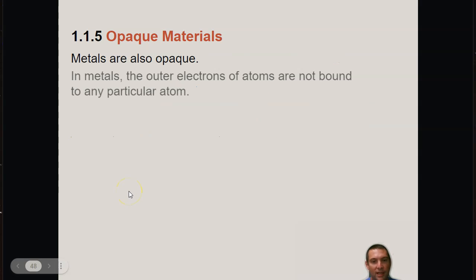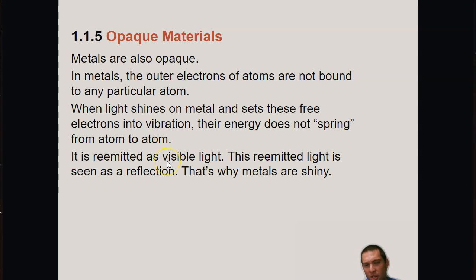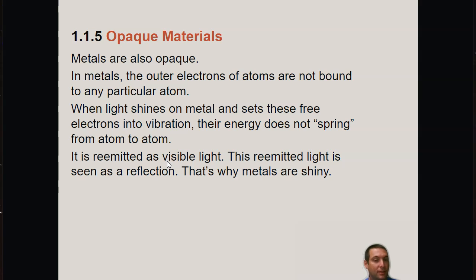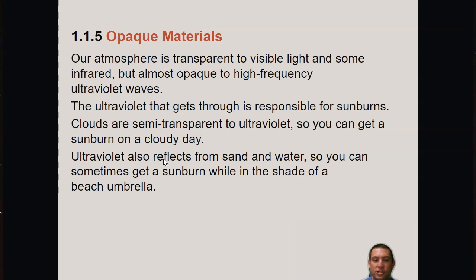In metals, the electrons of the atoms are not bound to any particular atom. When light shines on metal and sets these free electrons into vibration, their energy does not spring from atom to atom — it's re-emitted as visible light. This re-emitted light is seen as a reflection, and that's why metals are shiny.